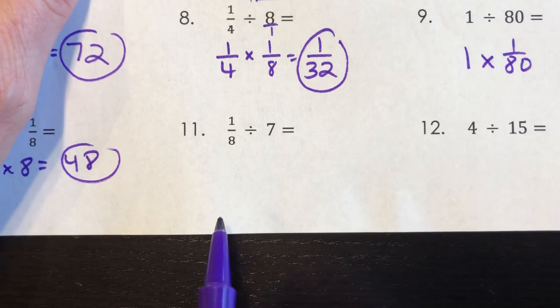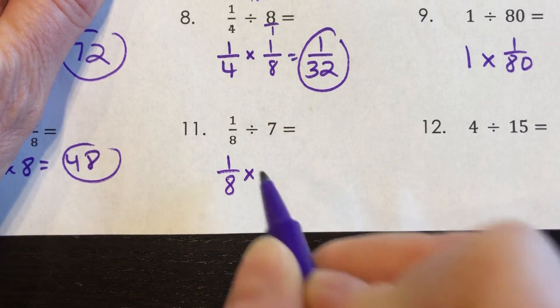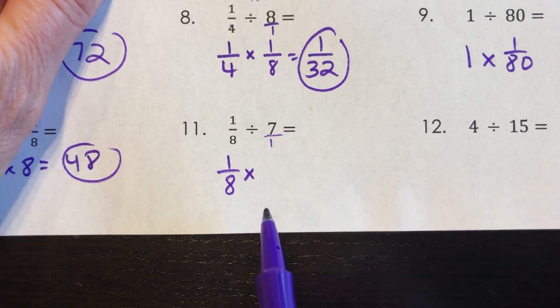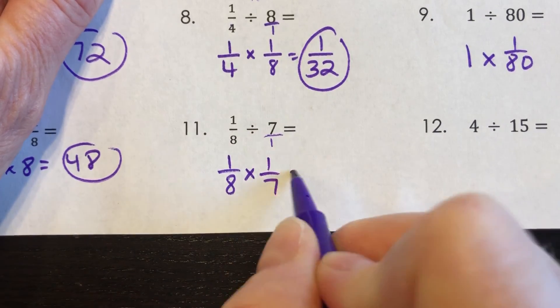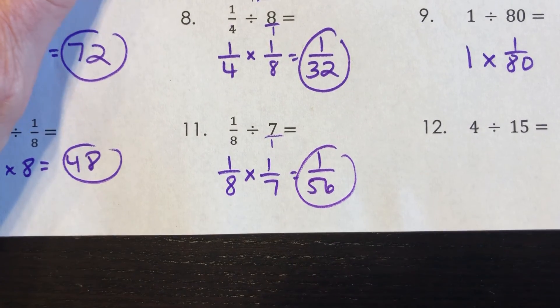Number 11, one eighth divided by seven. I'm going to go ahead and say one eighth times. And remember the reciprocal of seven would be one seventh. So I would get one over 56 for our final answer.